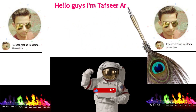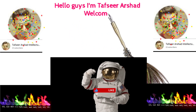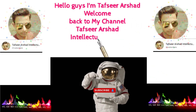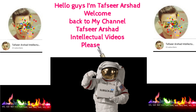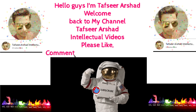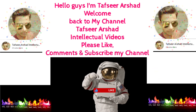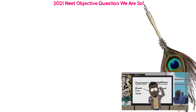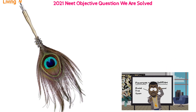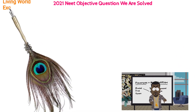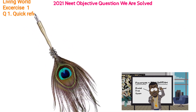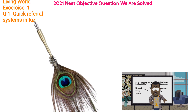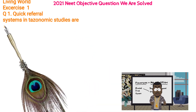Hello guys, I'm Tafsir Arshad. Welcome back to my channel, Tafsir Arshad Intellectual Videos. Please like, comment, and subscribe. 2021 NEET objective questions — we are solving Living World, Exercise 1. Q1: Quick referral systems in taxonomic studies are: 1. Herbarium.